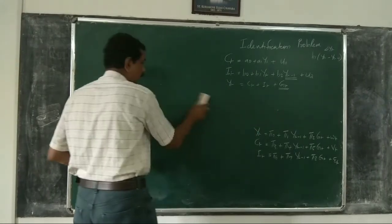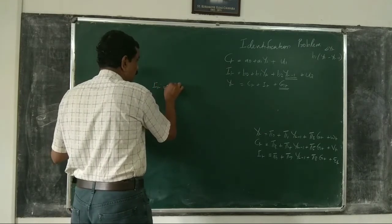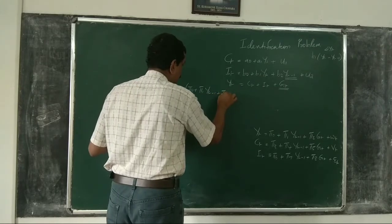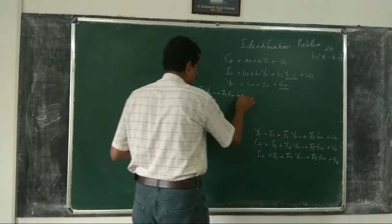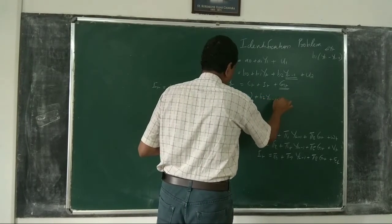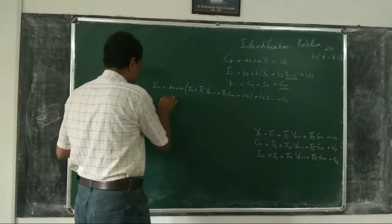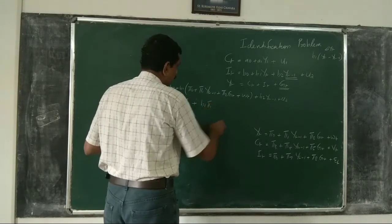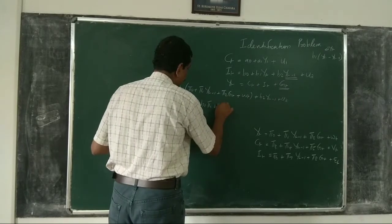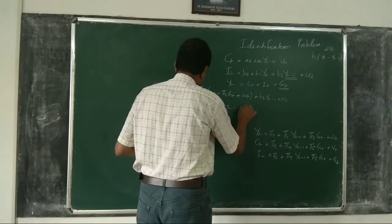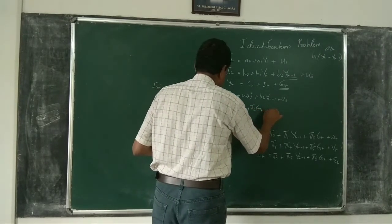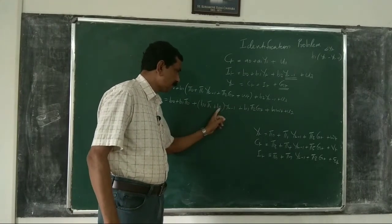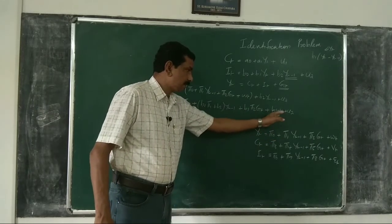What is the reduced form equation for It? It = B0 + B1·(π0 + π1·Yt−1 + π2·Gt + Wt) + B2·Yt−1 + U2. That can be written as: B0 + B1·π0 + (B1·π1 + B2)·Yt−1 + B1·π2·Gt + B1·Wt + U2. This gives us π6, π7, and π8 respectively, and the composite error term εt.